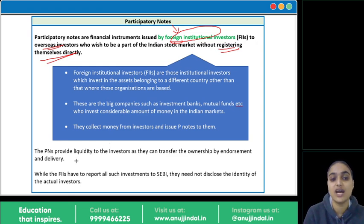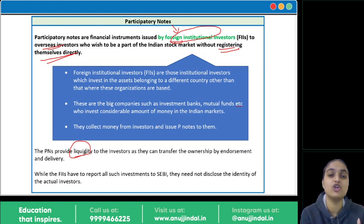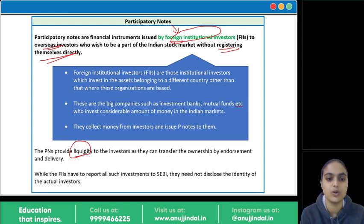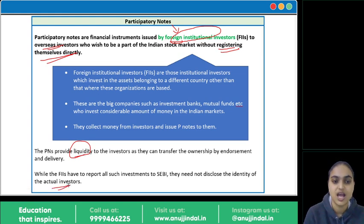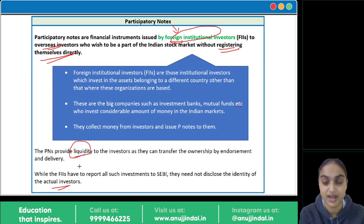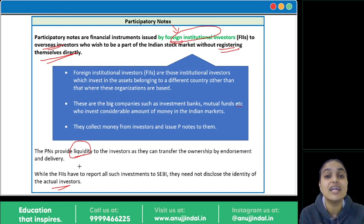P-Notes are liquid — they can be easily transferred. By holding P-Notes, you become a holder of certain securities with full liquidity; you can transfer these P-Notes. While FIIs have to report to SEBI about their investments, they don't need to disclose the identity of the actual investors. Foreign institutional investors report to SEBI how much investment they are making, but they don't need to disclose the identity of the people whose money is being routed.